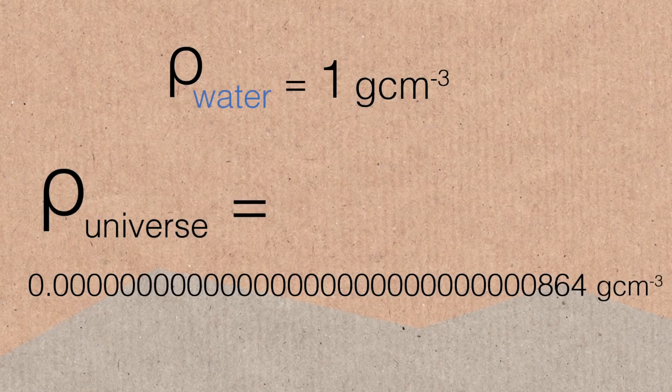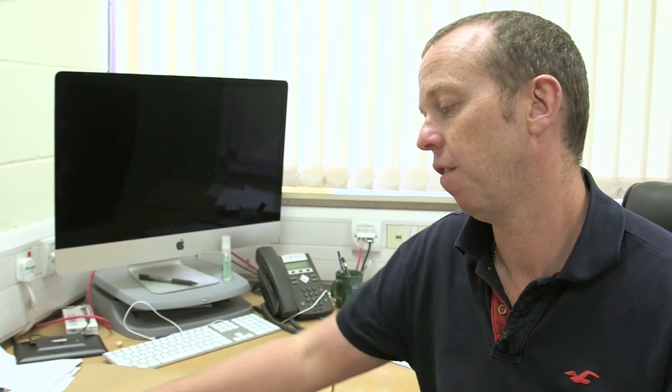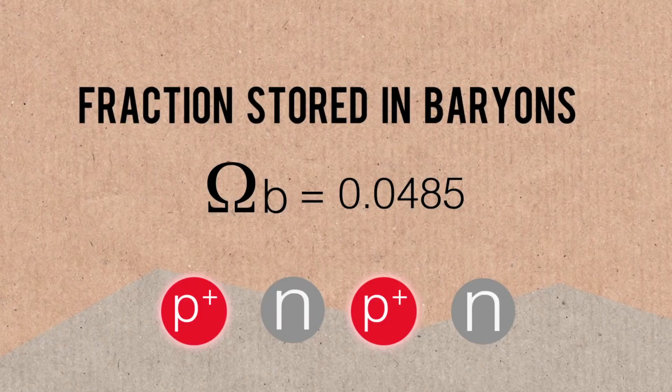The next bit of information is the fraction of that energy budget stored in baryons. In this context, baryons are just the protons and the neutrons, which is where the quarks live.